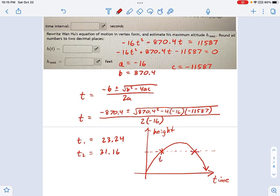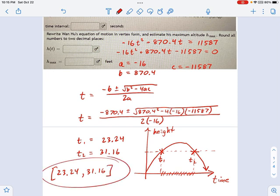It's above a certain altitude, so it's going to be between two locations in time. Here they are. There's T1, there's T2. So how do we say in between two locations in time? What I'm trying to say is this part of the timeline right here. Well, we have interval notation for this. This just becomes 23.24, all the way to 31.16. And this would be your answer right there.